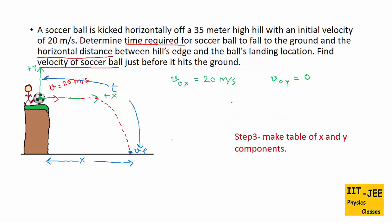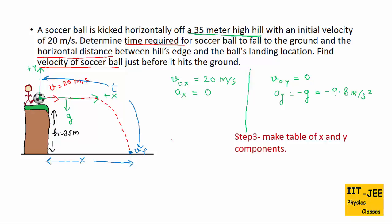Now we make a table of x and y components. There is only one acceleration — gravitational acceleration acting downward. So there is no acceleration in the horizontal direction: ax equals 0. And ay equals negative g, which is minus 9.8 meters per second squared. The hill is 35 meters high, and since the ball is going downward, the vertical displacement is minus 35 meters, so y equals minus 35 meters.